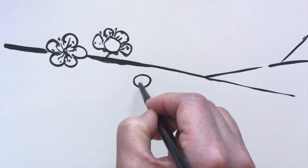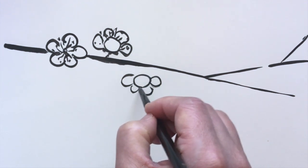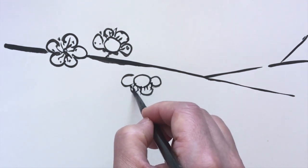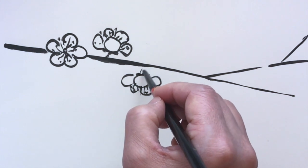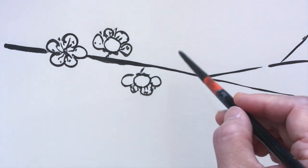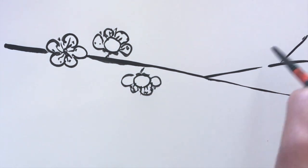And this one's just on the other side, so drooping down towards the ground. Practice drawing the flowers in different positions on the branch.